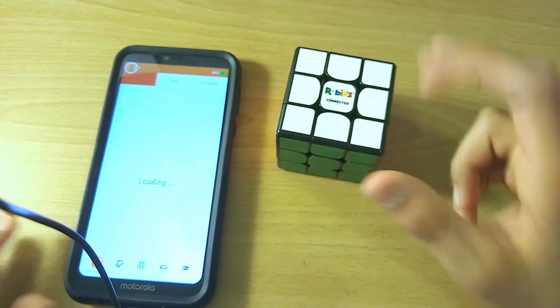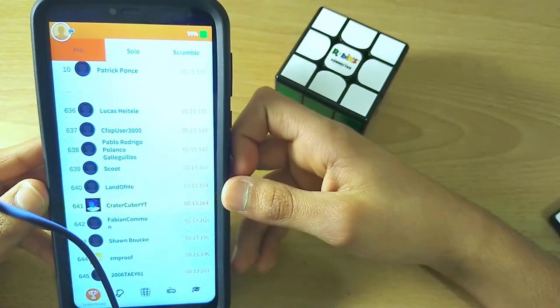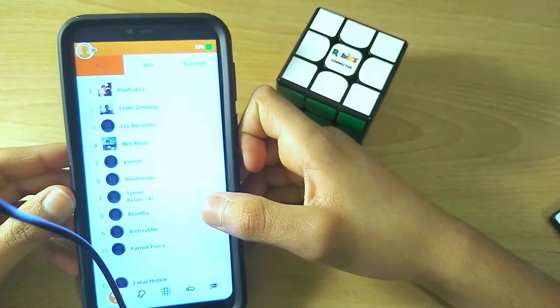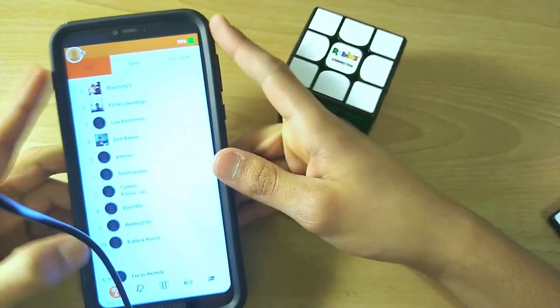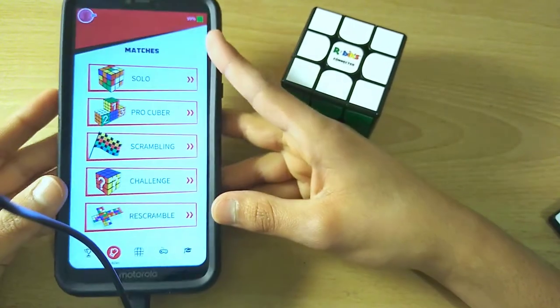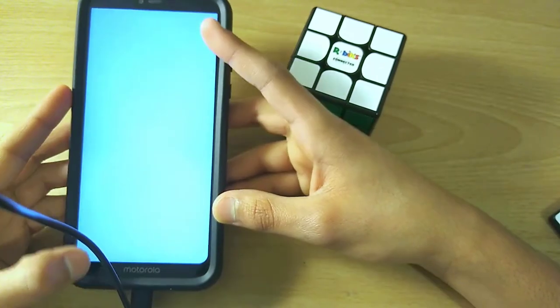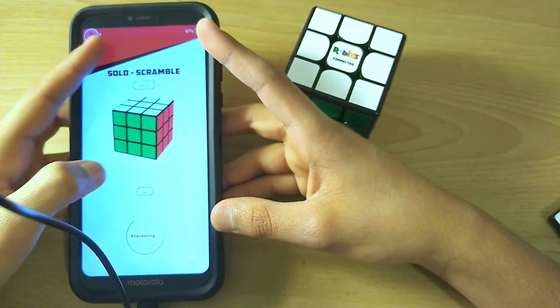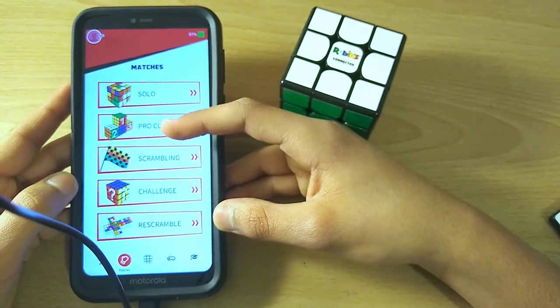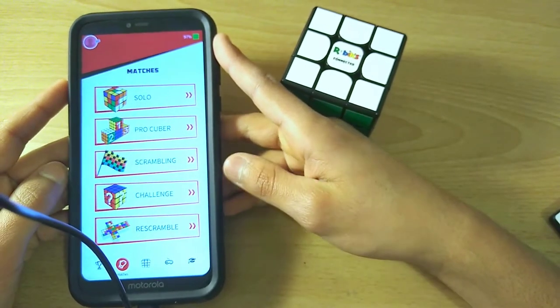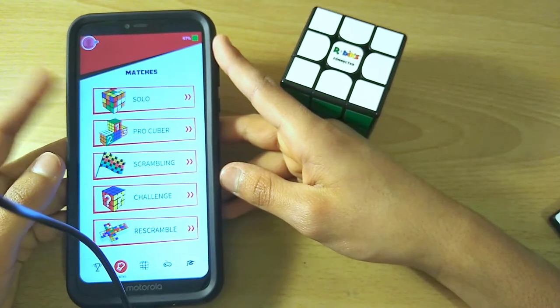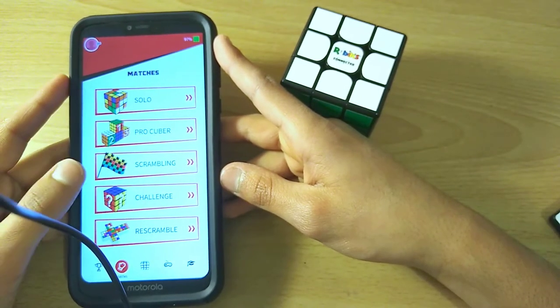So to start off, it's got like a trophy system, or like a podium, so like the fastest stuff, and the pro cuber, the solo, and the scramble stuff. It's got some matches, you can just do a solo match. So you can just do a solo match, you can do a pro cuber match, it's basically just racing. You can do scrambling, which is basically like you have to scramble a cube, and then solve it as fast as you can, like using the moves they provide.